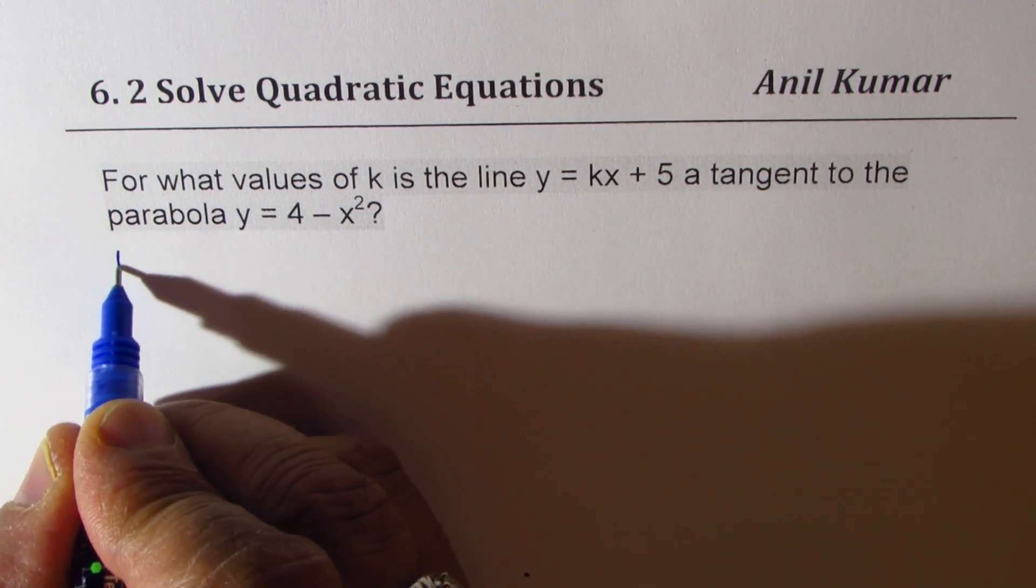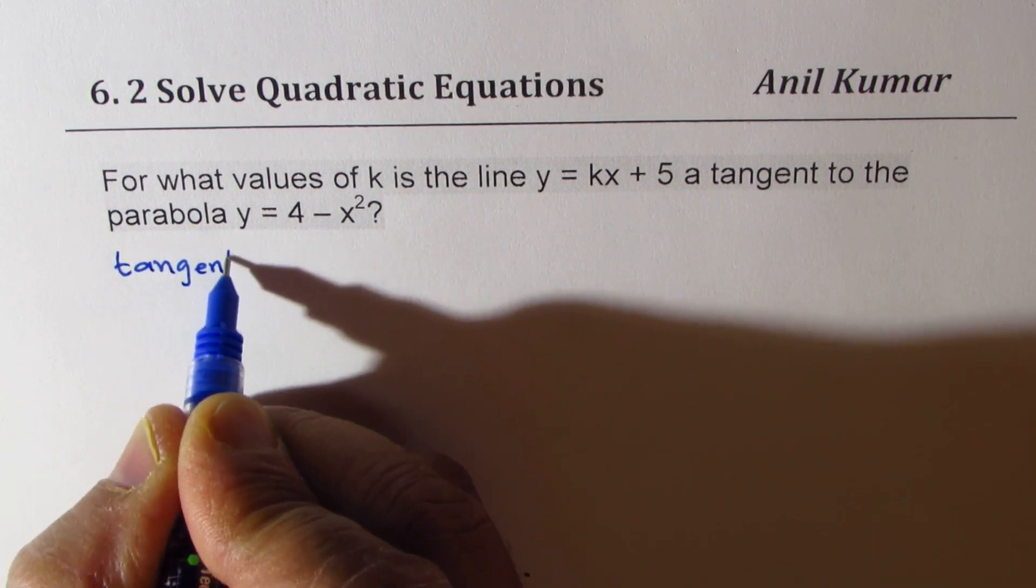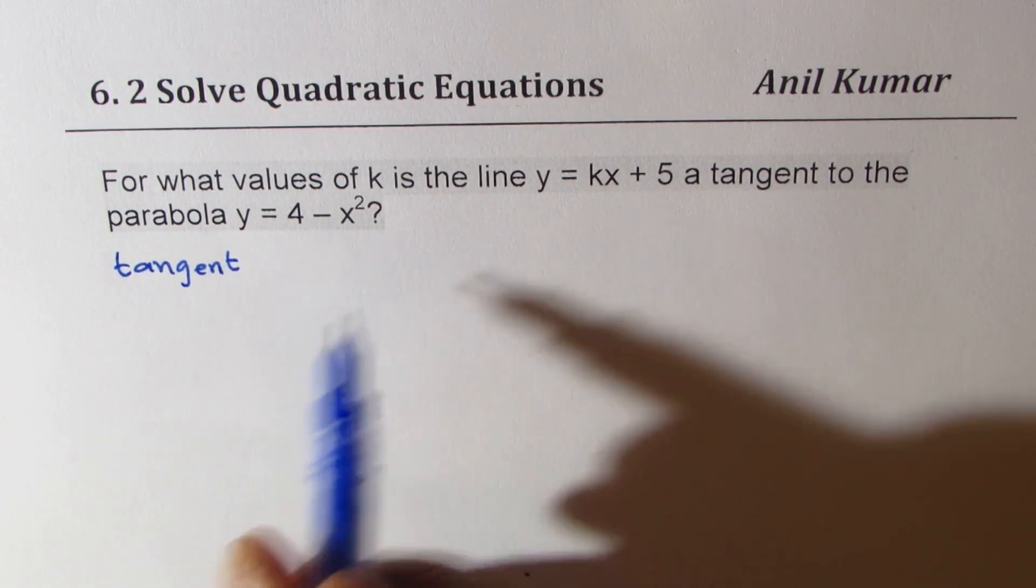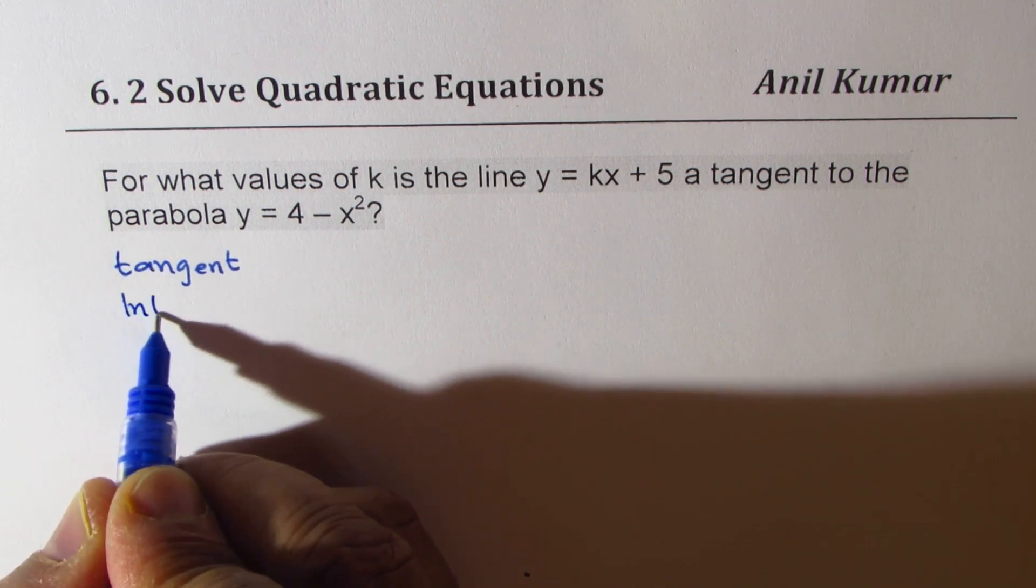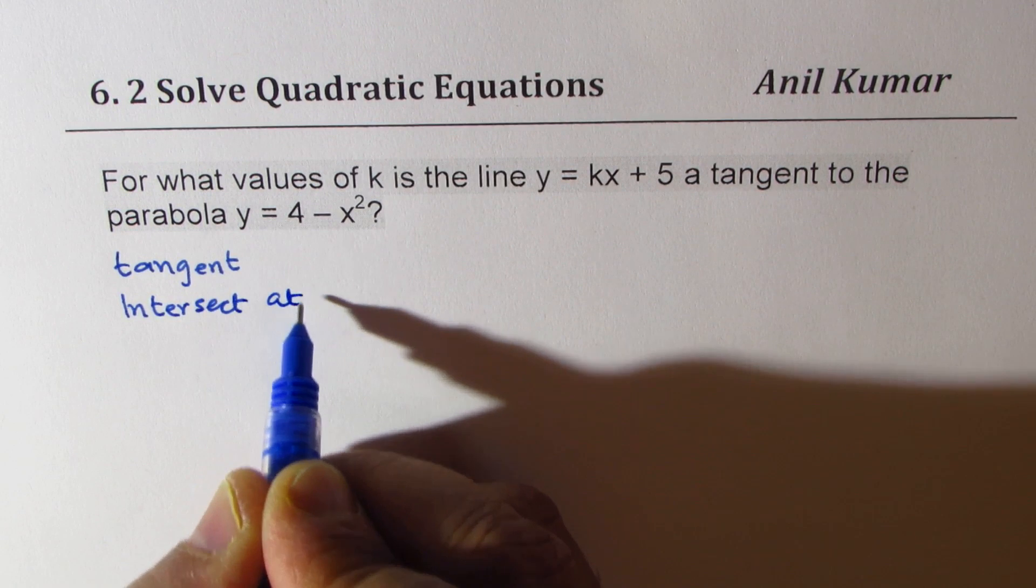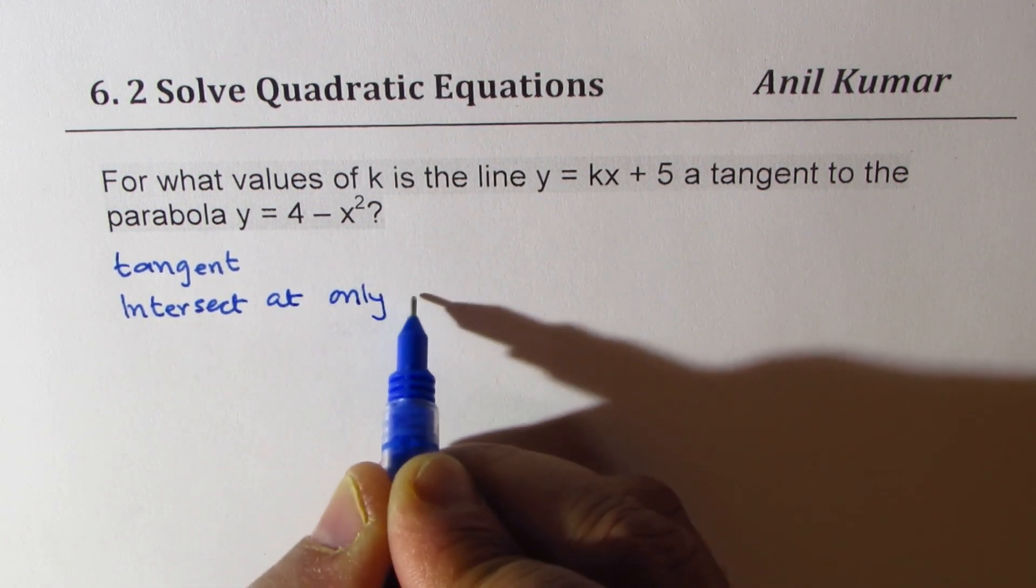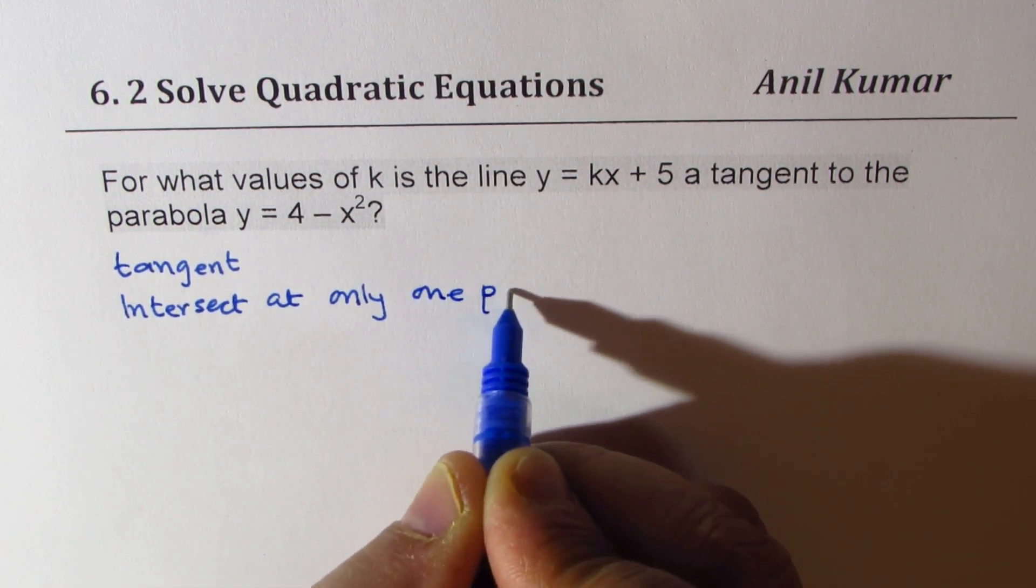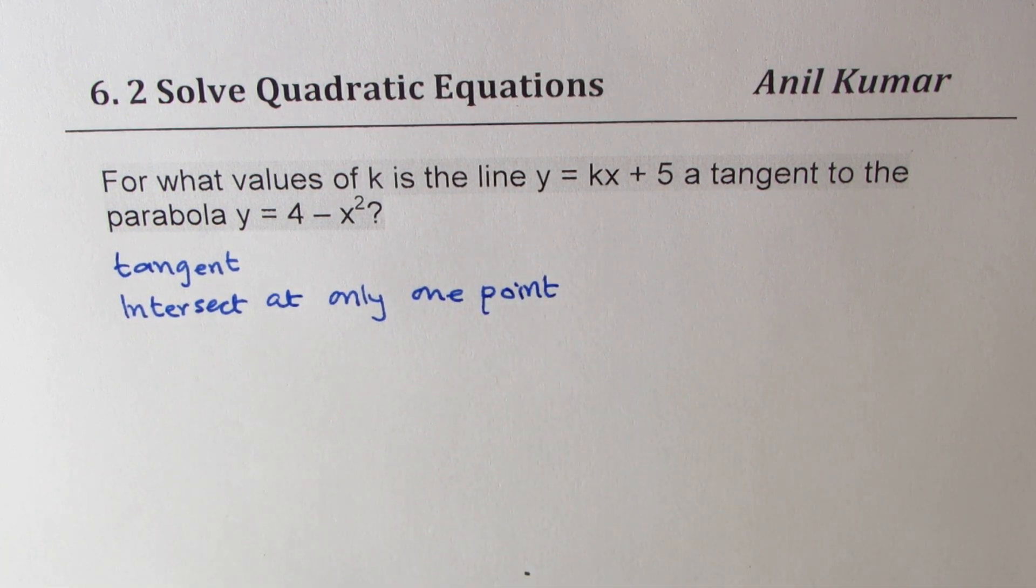Now when we say tangent, what does it mean? Tangent means they intersect at one point. Only one point. That is what we think about a tangent.